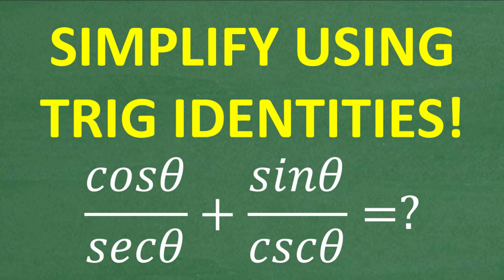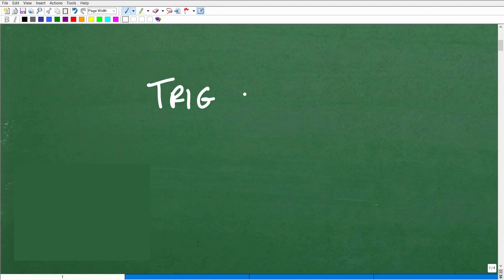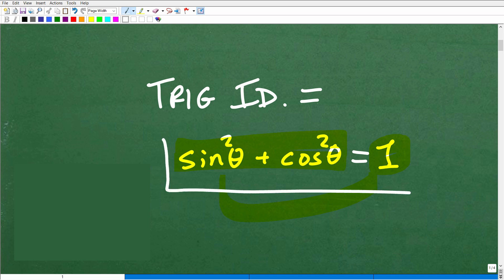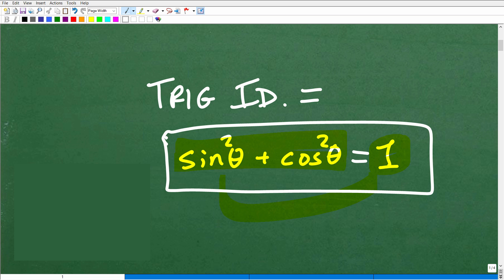So what is a trigonometric identity? There's a ton of these that you learn in trigonometry. Effectively, they are formulas. For example, sine squared theta plus cosine squared theta equals 1. So if you come across that expression, you can substitute a 1 for all of it, or substitute sine squared plus cosine squared for a 1. An identity is basically an equivalency — think of them as formulas. There are a lot of identities you need to learn and be able to work with.